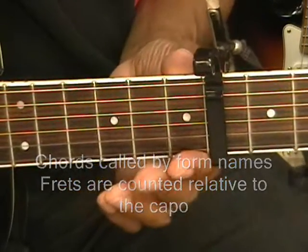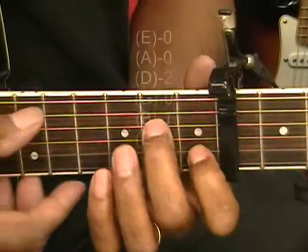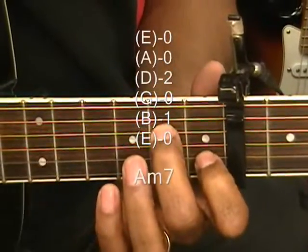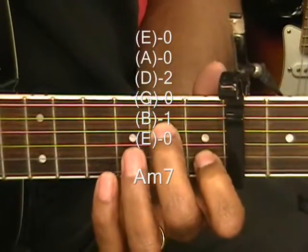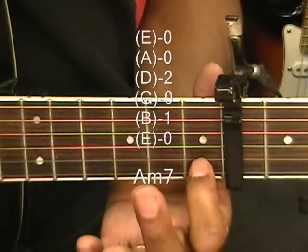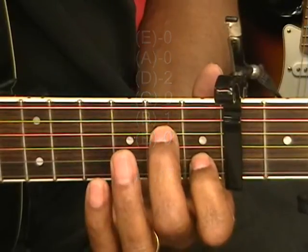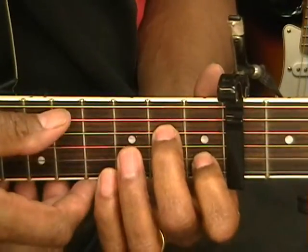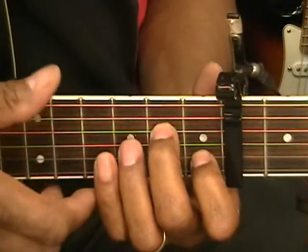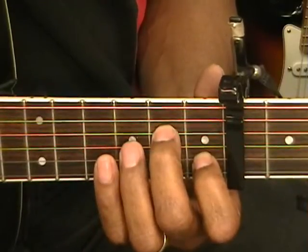Our first chord is A minor 7. We have our first finger on the first fret on the B string, and the middle finger on the D string second fret. And we're playing that from the A string, but we can also play it from the low E without a real problem.